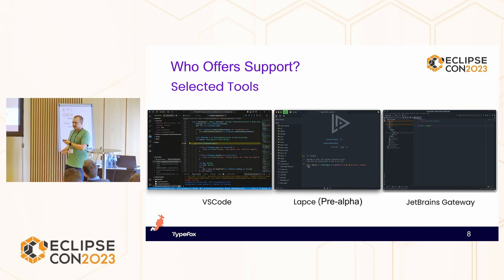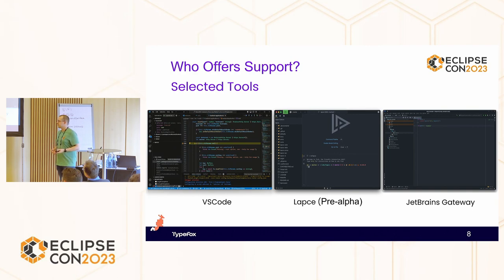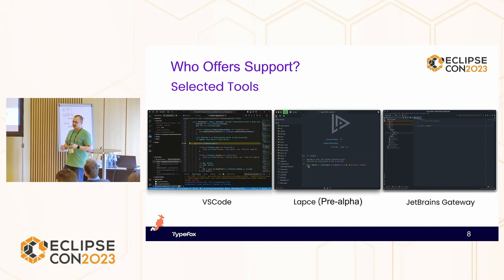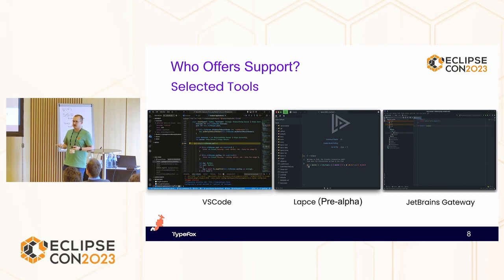And then we also have Zed, which is currently in pure alpha stages — it's quite new. It's an open-source Rust-based IDE that also supports remote development. We will go more in-depth on both VS Code and Zed regarding architecture, because they're both open-source and explain how the architecture actually looks. I have no idea how the JetBrains Gateway architecture looks because they never explain it and it's not open-source.